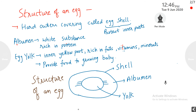An egg has three parts. First is the eggshell, then albumen, then egg yolk. The hard outer covering is called the eggshell — it is a thin but hard covering, and its function is to protect the inner parts of the egg.